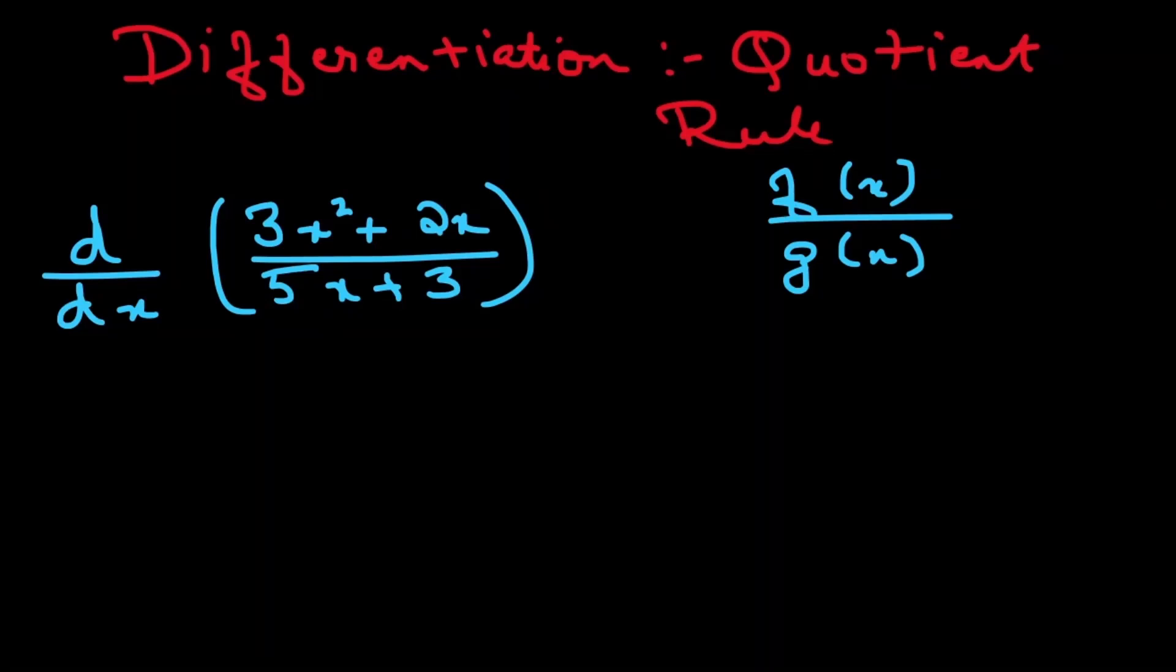So the quotient rule is: we first need to differentiate the numerator, which is the f'(x) value of the top function.